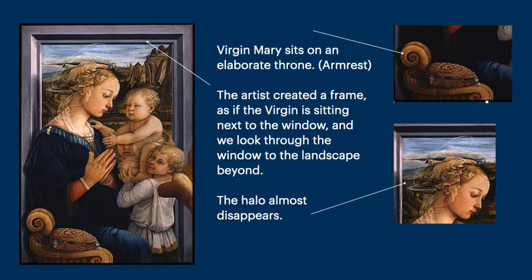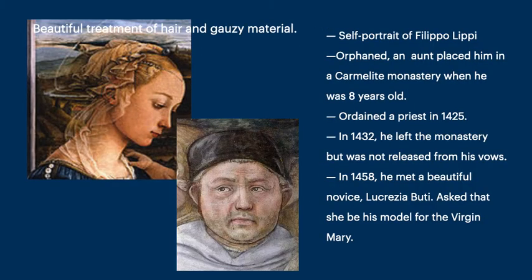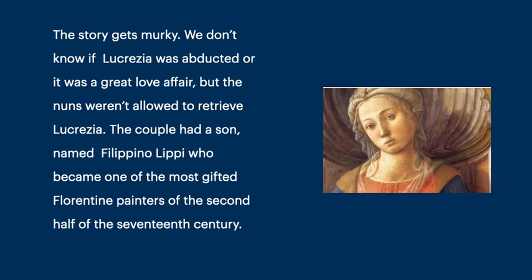There are amazing details: the elaborate throne, the armrest. The artist created a frame as if the Virgin is sitting next to the window, and we look through the window to the landscape. The halo almost disappears. Look at the beautiful treatment of the hair and the veil. Below, you see the self-portrait of Filippo Lippi. He was orphaned and sent to a Carmelite monastery and became a priest. In 1432, he left the monastery, but not his vows. In 1458, he met a beautiful novice, Lucretia Butti, and asked that she be his model for the Virgin Mary. We don't know if Lucretia was abducted or if it was a great love affair, but the couple had a son named Filippino Lippi, who is also a great painter of the Florentine period.